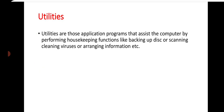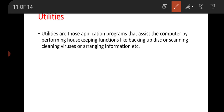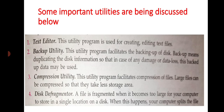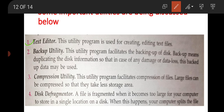The second category is utilities. Utilities are application programs that assist the computer by performing housekeeping functions like backing up disk, scanning and cleaning viruses, or arranging information. Common utility tasks include data backup, system scan, virus removal, and information arrangement. One important utility is the text editor, used for creating and editing text files — for example, Notepad, Notepad++ etc.